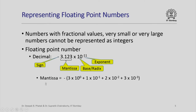In this decimal representation, the mantissa 3.123 means 3 times 10 raised to 0, plus 1 times 10 raised to -1, plus 2 times 10 raised to -2, plus 3 times 10 raised to -3, and of course there is a minus sign. Similarly, I could write a number in binary where instead of the mantissa being represented in decimal, I could represent it in binary and still have a radix point. The base would be 2, and the exponent instead of being a decimal number could also be a binary number.